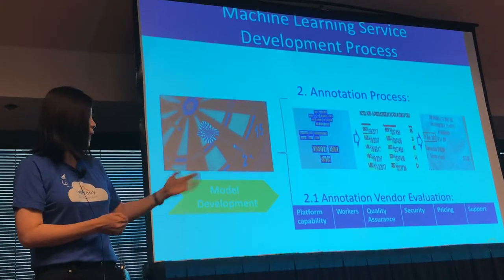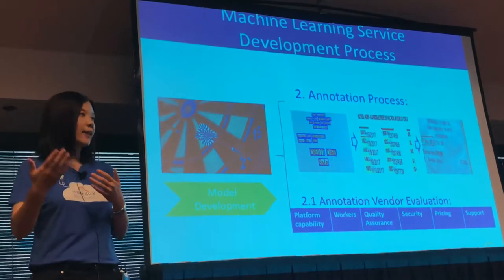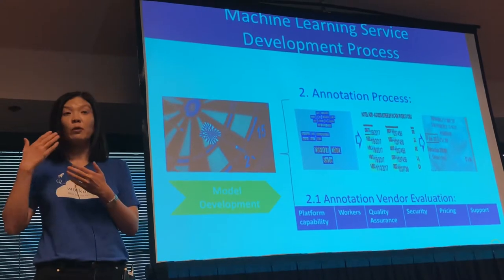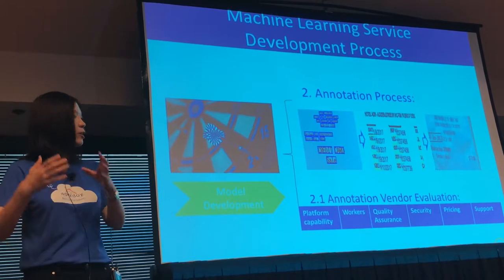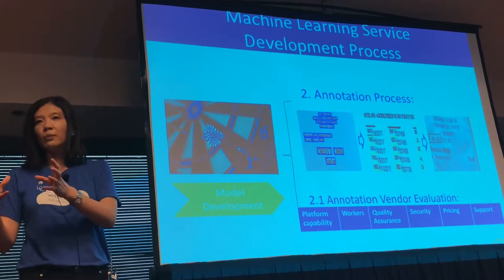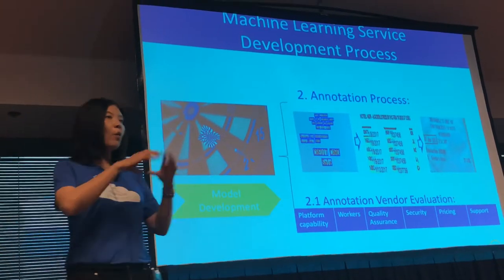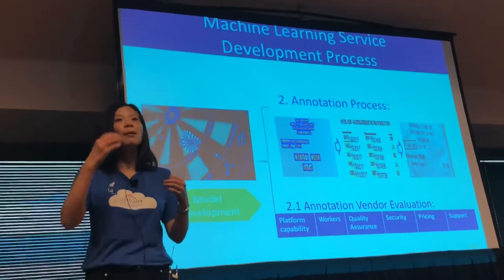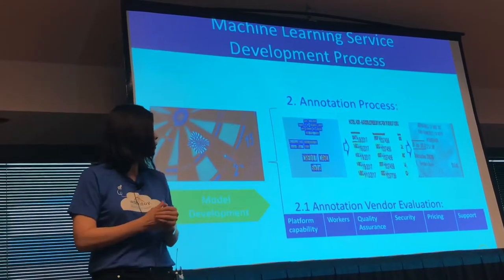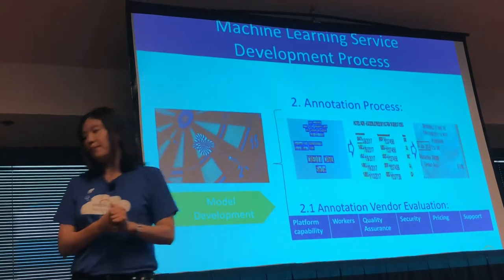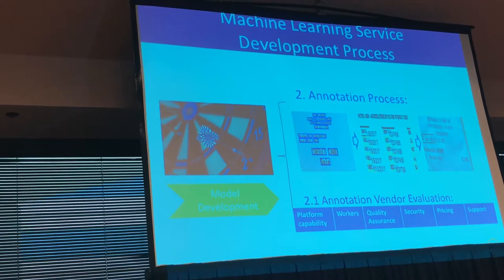Quality assurance was also critical — we need to trust that annotated data used as ground truth is actually correct. We relied on the vendor's internal quality assurance policy and also had our own internal data analysts do sampling checks. We ultimately chose Figure Eight, originally called CrowdFlower, as our annotation partner.